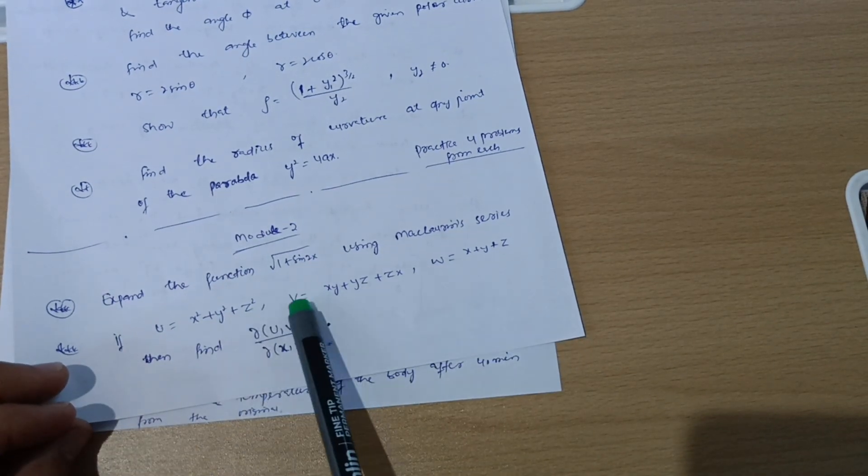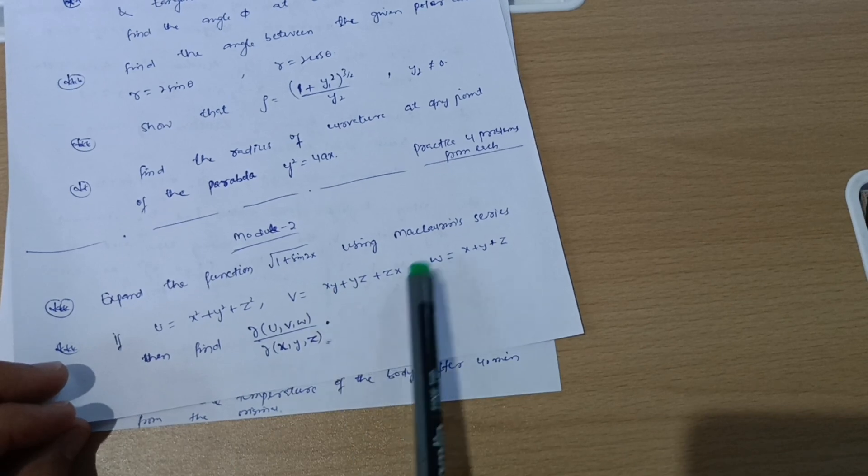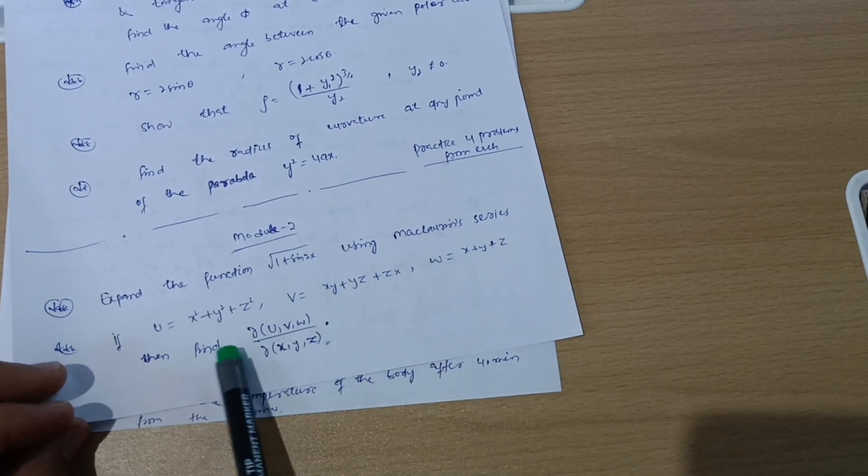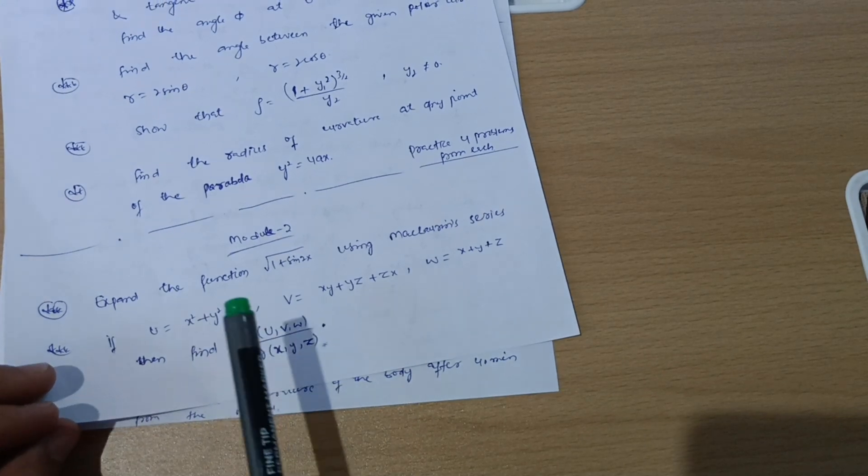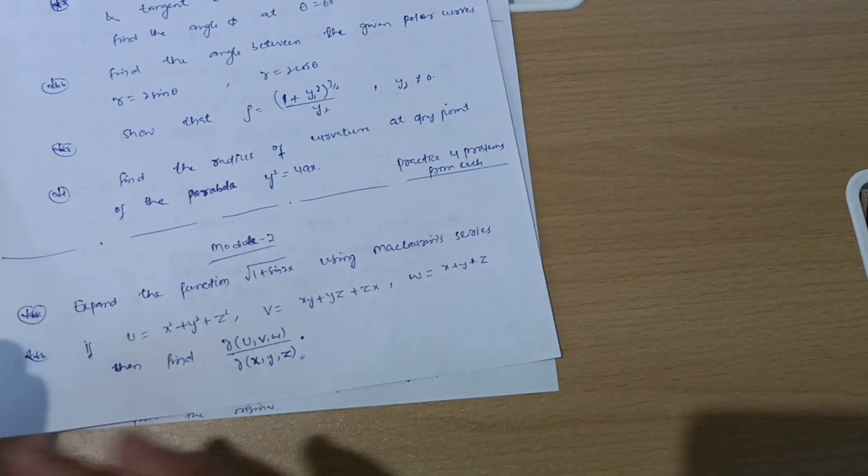If u = x² + y² + z², v = xy + yz + zx, w = x + y + z, then find ∂(u,v,w)/∂(x,y,z). These are the Jacobian problems, very simple ones. If I get the time, I will surely make one short video for you guys so that you can tackle the mathematics subject.